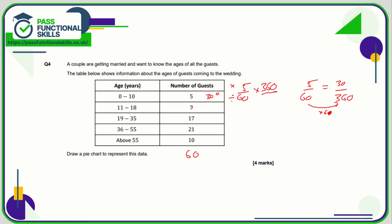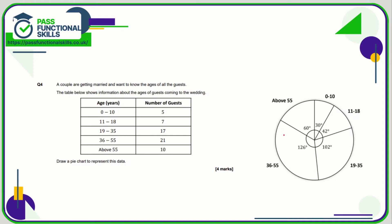For 11 to 18, calculate 7/60 of 360: 360 divided by 60 times 7 gives 42 degrees. For the next group, 360 divided by 60 times 17 is 102 degrees. Then 360 divided by 60 times 21 is 126 degrees, and 360 divided by 60 times 10 is 60 degrees. Double check they add to 360, then draw the pie chart using a protractor.